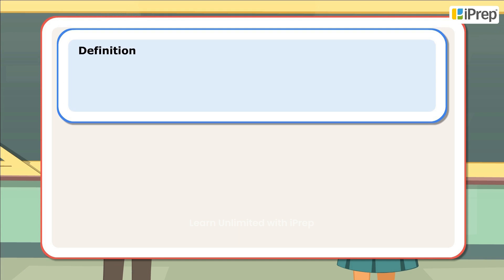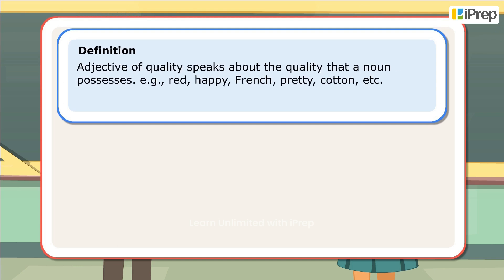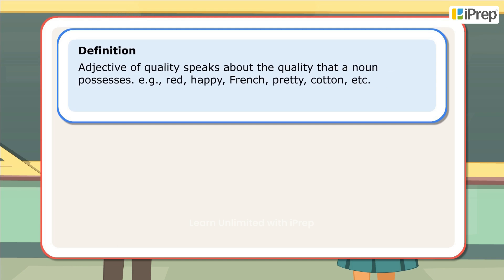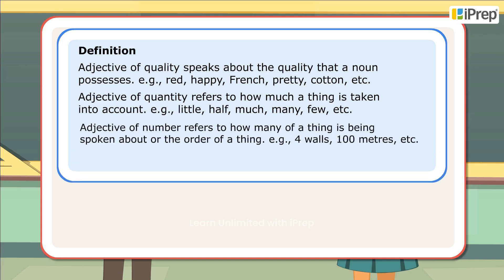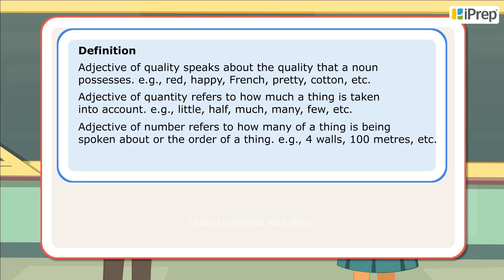Definition. Adjective of quality speaks about the quality that a noun possesses. Adjective of quantity refers to how much a thing is taken into account. Adjective of number refers to how many of a thing is being spoken about, or the order of a thing.